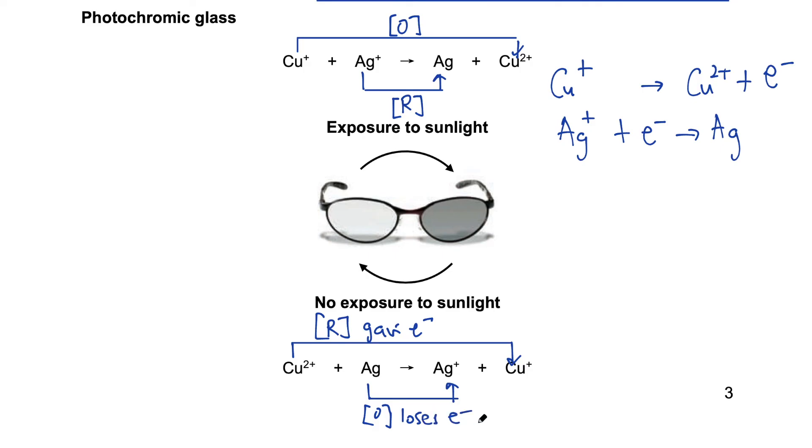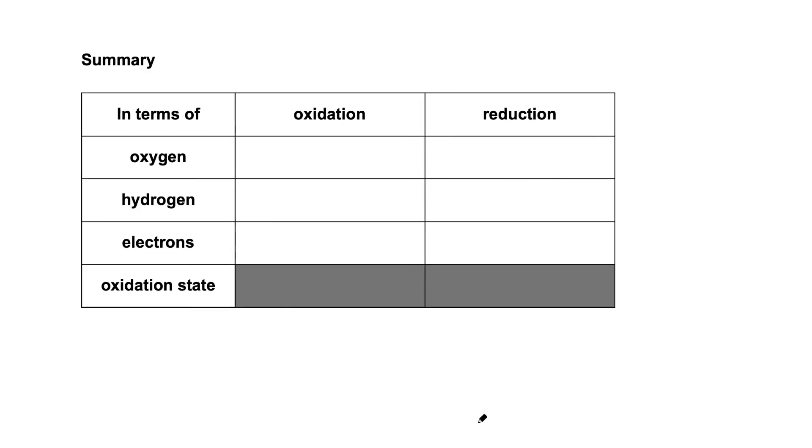So in this video, we have seen three ways of defining what oxidation and reduction means. Consolidate what we have learned, and fill in the table below. So we see that when a substance gains oxygen, it is oxidized and when a substance loses oxygen it is reduced. When a substance loses hydrogen it is oxidized. When a substance gains hydrogen, it is reduced. When a substance loses electrons, it is oxidized. And when a substance gains electrons it is reduced. All right, so I hope you can remember these rules. You notice there's one more row here. We'll take a look at the idea of oxidation state in the next video. Thanks for watching.